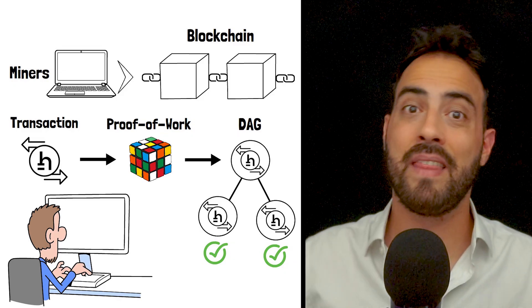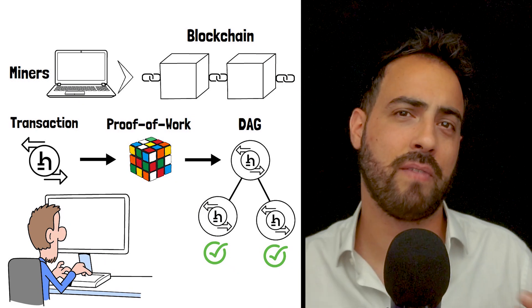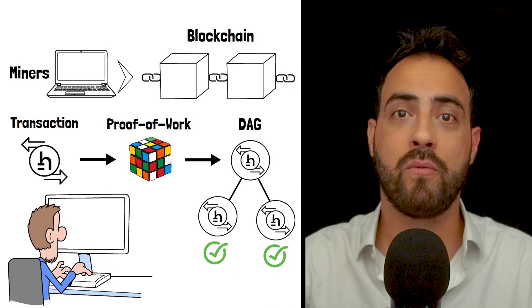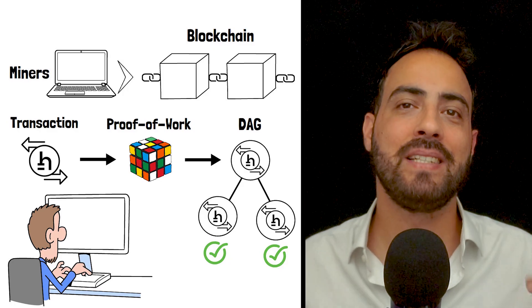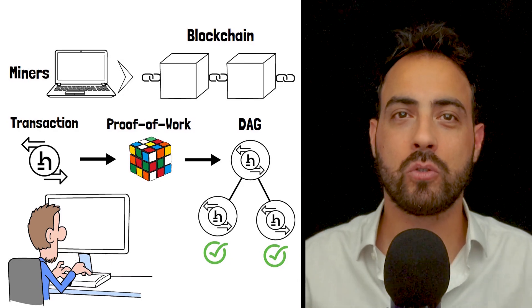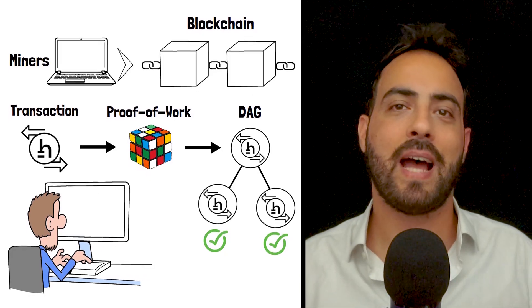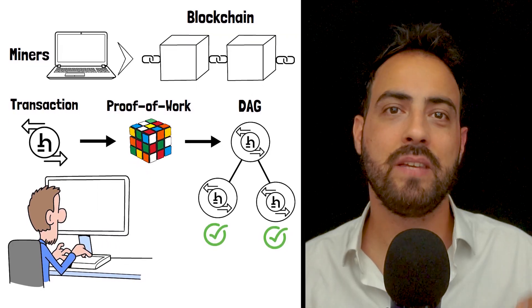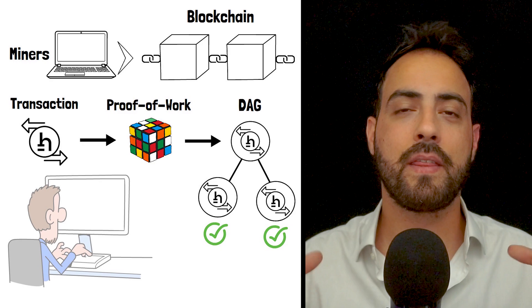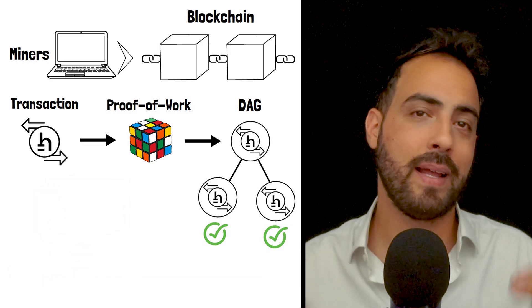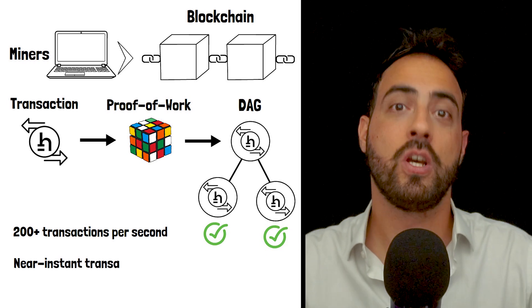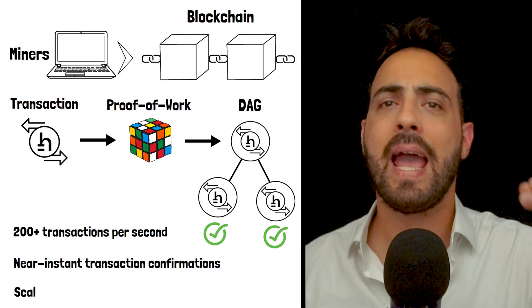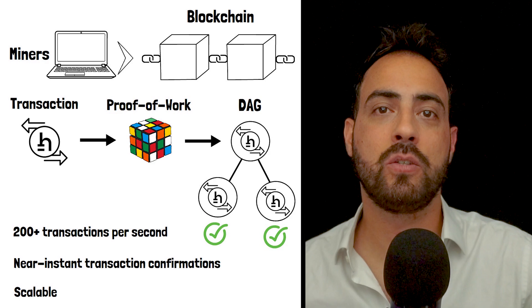The consensus algorithm then determines which transactions are valid based on their accumulated proof-of-work and position in the DAG. All of this happens in a decentralized manner, with no central authority controlling the process. This architecture allows Hathor to achieve some impressive technical specs, including a theoretical throughput of 200 plus transactions per second, near-instant transaction confirmations during high activity periods, and the ability to scale further as network usage grows.